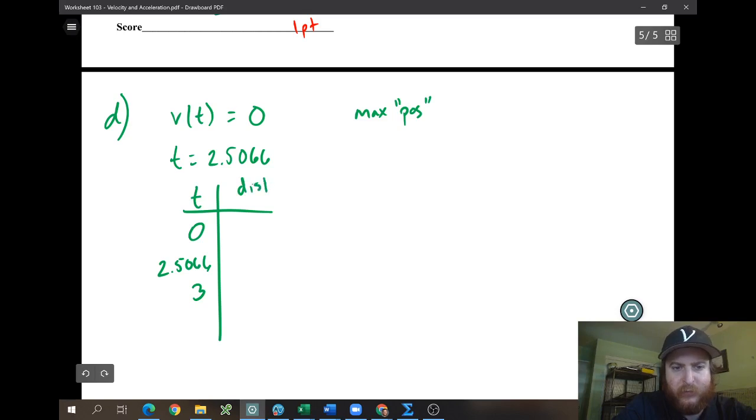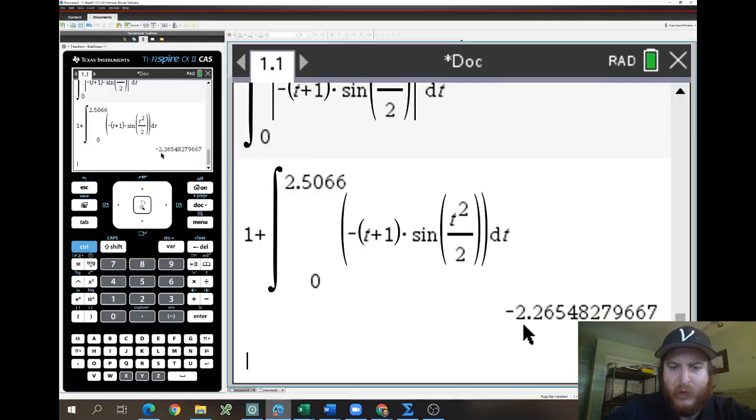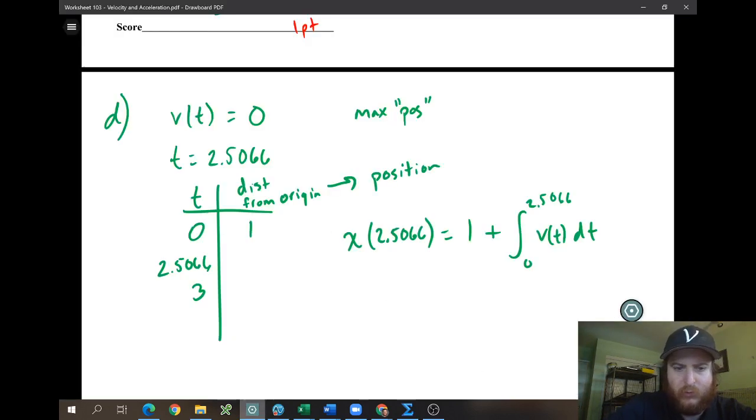So we put in our end points and our critical points. And now this distance from the origin, again, we're just kind of feeling that this is the position. It's the position, but it's positive. So the position at zero they gave us was one. To get the position at 2.5066, we're going to just use our formula. One plus the integral from zero to 2.5066 of V of T dt. So I typed this into my calculator for us already. And I got one plus that integral, negative 2.2655.